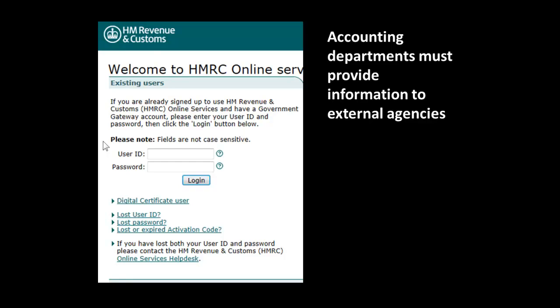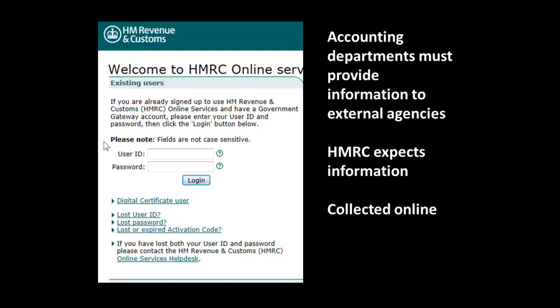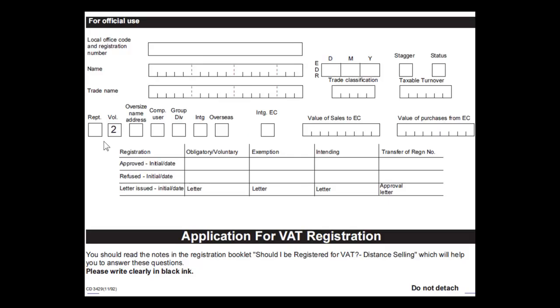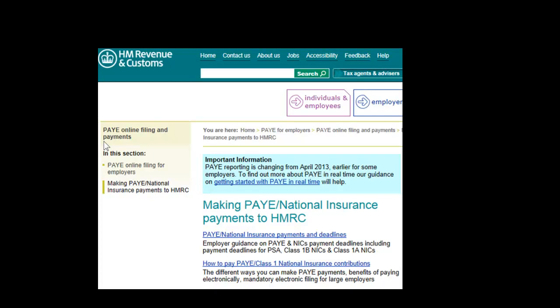Other external agencies who require information are of course Her Majesty's Revenue and Customs. Most of that is now asked for online, so you need to be familiar with dealing with online communication. The same thing applies for VAT — most of that is now collected by online information. And of course the same applies for payments of taxes collected from employees and national insurance payments.